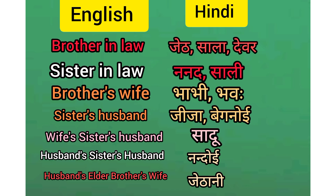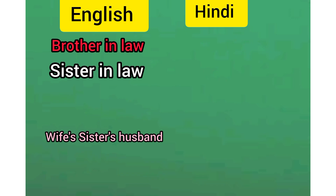Brother's wife — Bhabi, Bhabhi. Sister's husband — Jija, Behenoi. Wife's sister's husband — Sadhu. Husband's sister's husband — Nandoi. Husband's elder brother's wife — Jekhani. Thanks for watching.